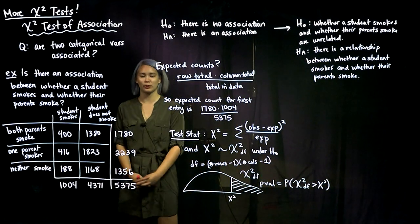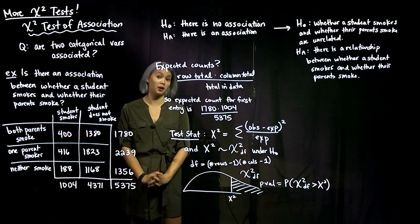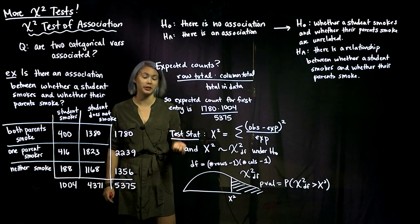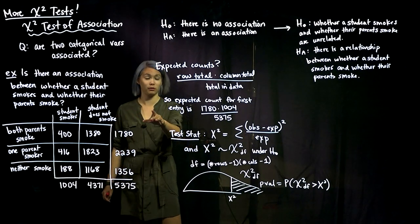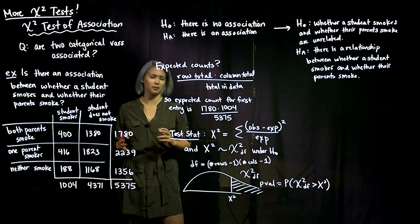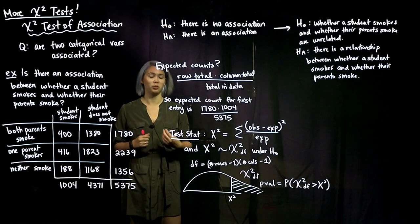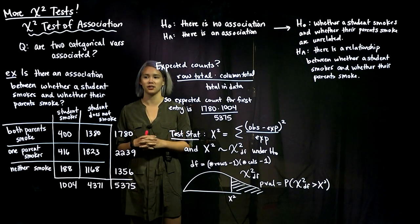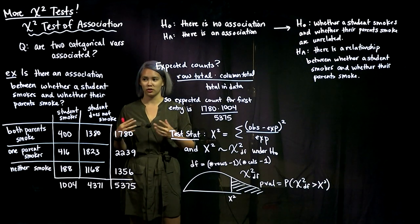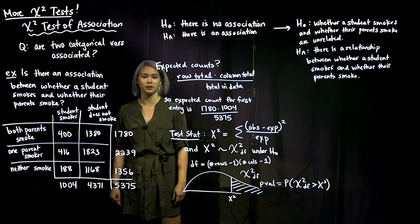In the previous chi-squared test video we talked about just having one categorical variable, and now we're going to talk about having two categorical variables. We're wondering: is there some kind of association or dependence relationship between these two categorical variables? That's the big research question we're trying to answer.